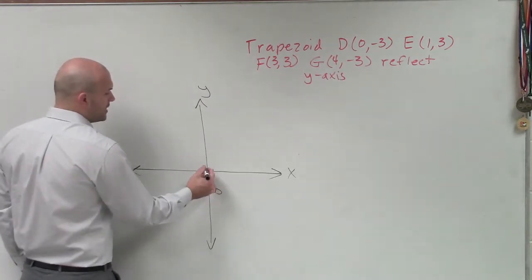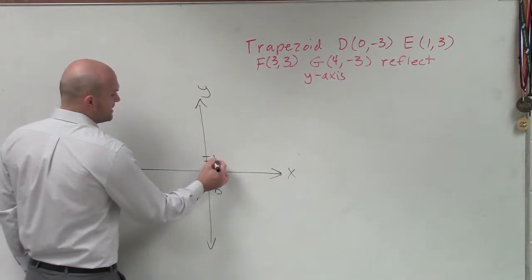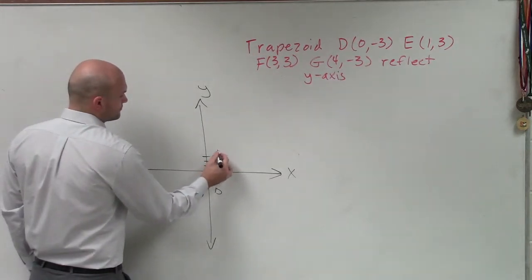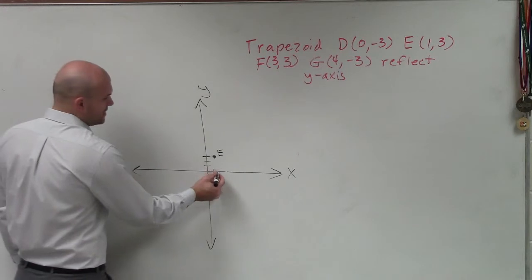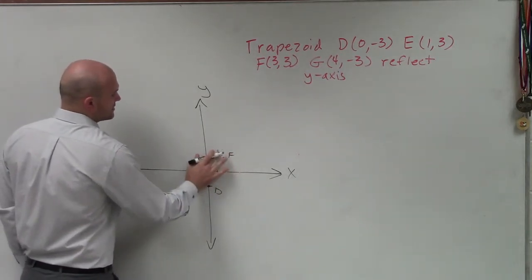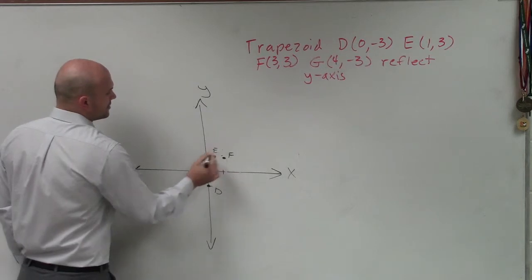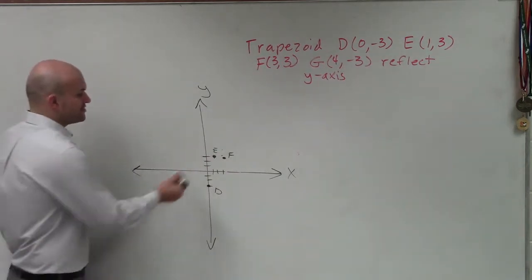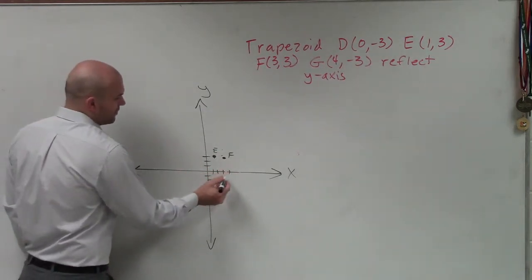Next point is over 1, up 3. That's going to be E. And then I have F, which is 3, up 3. So that's F. I guess I'll maybe make E a little bit smaller. And then I have G, which is 4. 1, 2, 3, 4, negative 3.